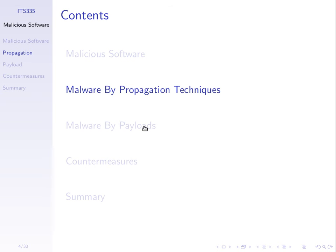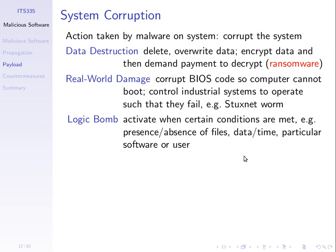That covers propagation techniques. Now, what does malicious software actually do? The payload is what it carries with it and performs. The software could perform some corruption of the computer system it executes on, including data destruction — deleting files, overwriting data, not just deleting a file but replacing a one megabyte file with one megabyte of random data, or encrypting data and then demanding payment.